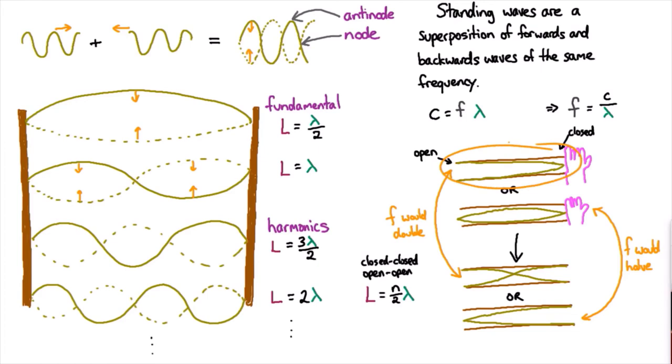then that lowest one is lambda on four. The length is lambda on four. Then the next one, you're going to have an extra half wavelength, so that'll be three lambda on four, five lambda on four, and so forth. And so a formula that gets all of that is, again, for n being one, two, three, and so forth.